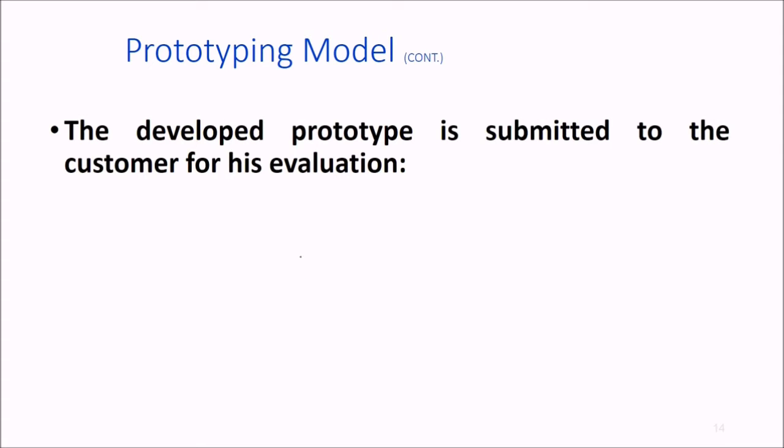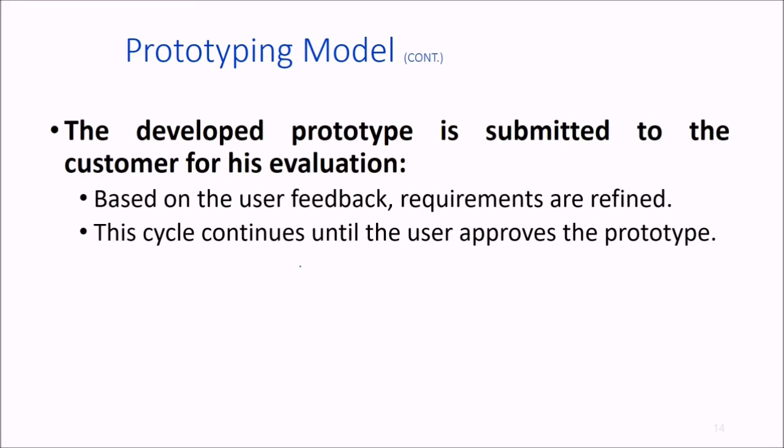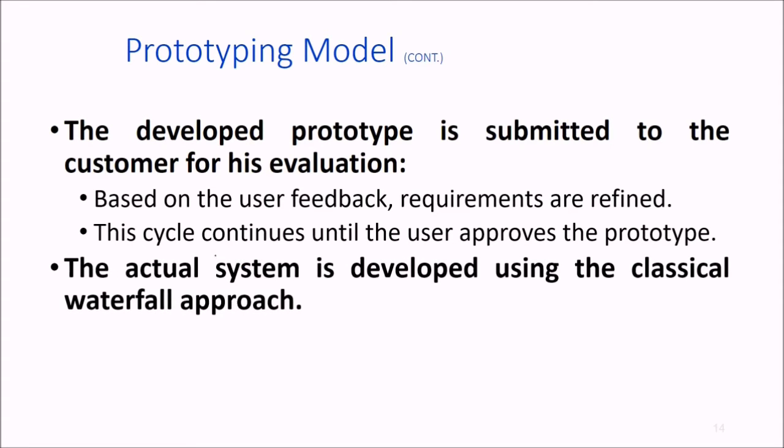The developed prototype is submitted to the customer for evaluation. They provide feedback and requirements are refined. This cycle continues until the user approves the prototype, and then the actual system is developed using the classical waterfall approach. All prototyping ends with final development employing the classical waterfall approach.